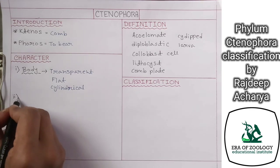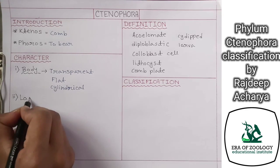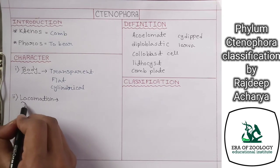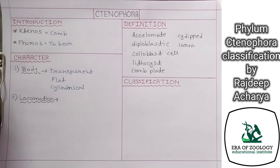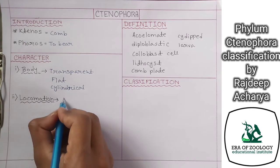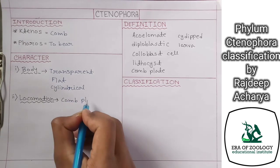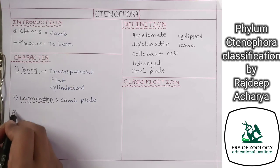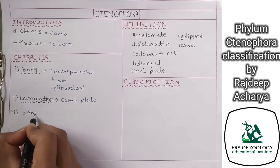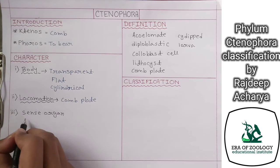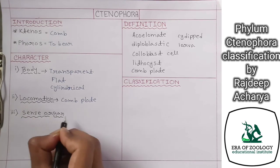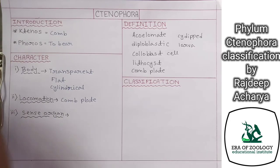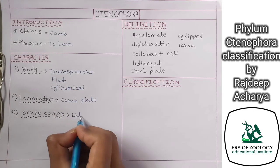The next characteristic feature is locomotory organ — the locomotory organ is the comb plate, which is actually the main characteristic feature of Ctenophora. The third characteristic feature is the sense organ — the sense organ is the lithocyst, which helps the animals of this phylum to sense the external environment.